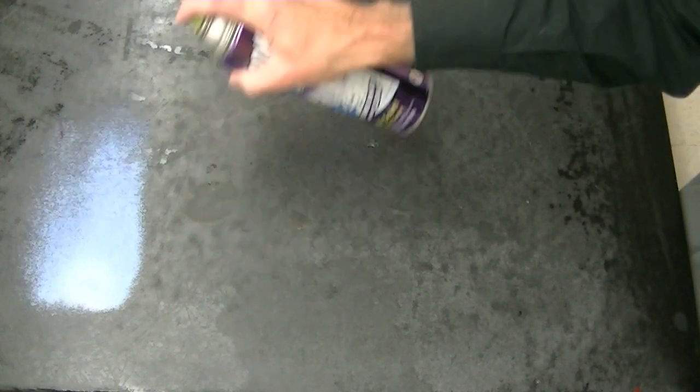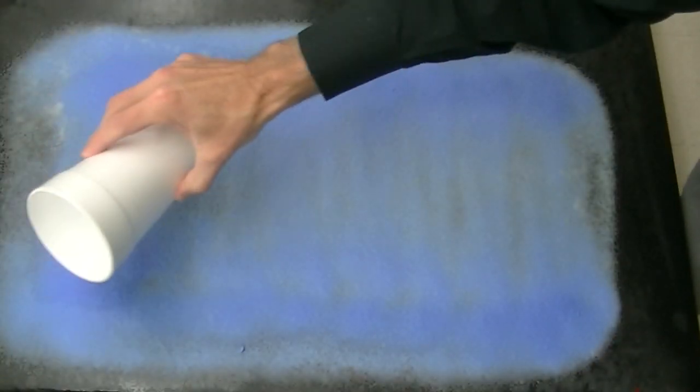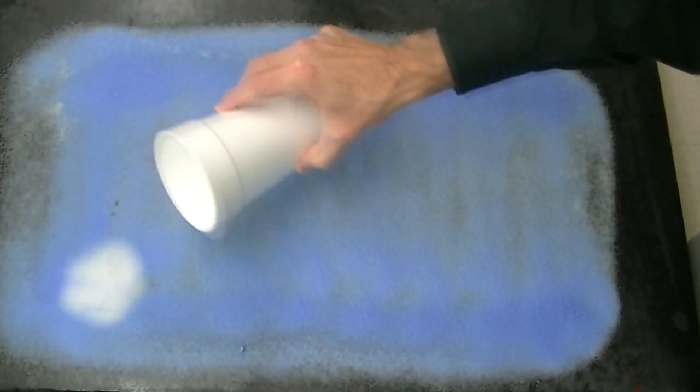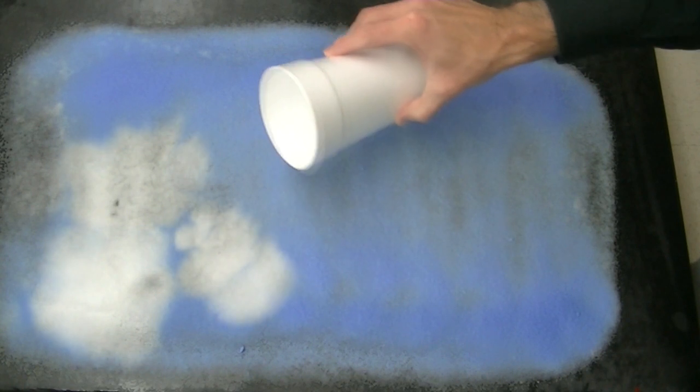The dry ice that is placed in the cup goes directly from a solid to a gas. This causes a lot of carbon dioxide gas to build up in the cup. When the cup is poured over the surface of the cleaner, carbon dioxide gas flows out of the cup and onto the cleaner, and the carbon dioxide gas changes the color in the cleaner from blue to white.